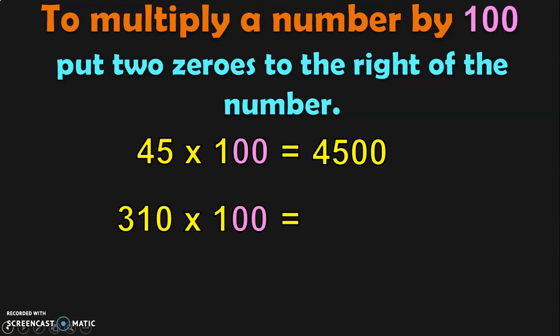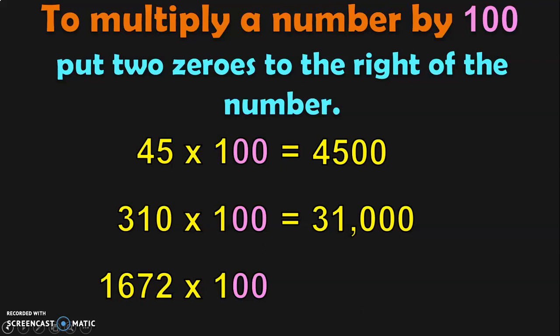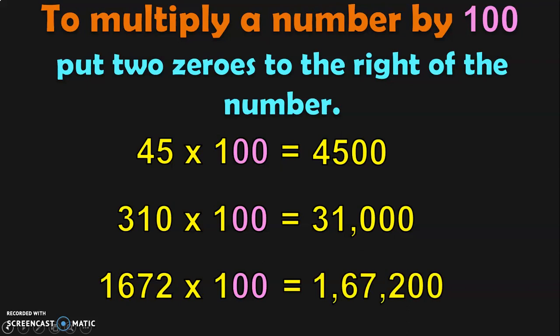What is 310 into 100? Write down the number 310 followed by two zeros. This is a large number, so you add the period after the 1's, 10's, and 100's place and you will read the number as 31,000. Next, 1,672 into 100 — write down 1,672 followed by two zeros. This is a 6-digit number, so put the periods at the appropriate places. You will get the answer 167,200.